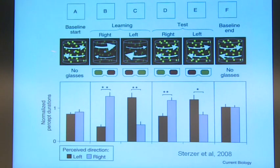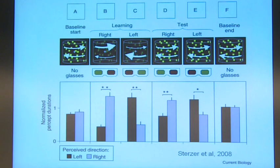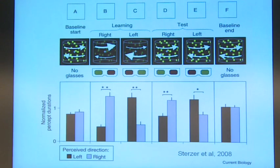It's inherently ambiguous. Sometimes you will see the cylinder rotating in one direction and sometimes it will change, because there's no actual sensory information to tell you which is which. So if you put someone in front of these, they will tend to flip between the two directions — left and right of rotation.